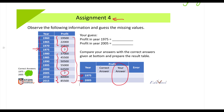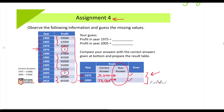Once you note down your answers and then resume this lecture, you will see that I will be disclosing the answers for you, and then you can go ahead and calculate your error. Assuming you have entered your answers, I will disclose the right answers: in 1975 the profit was 31,000, and in 2005 it was 73,500. Go ahead and calculate your error — that way you will know what your average error is.